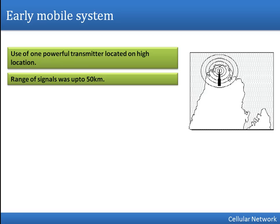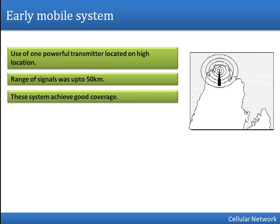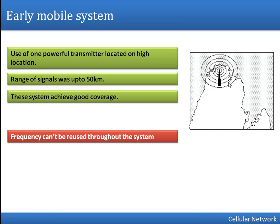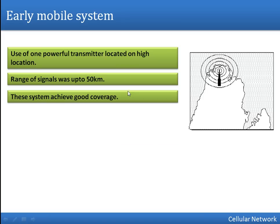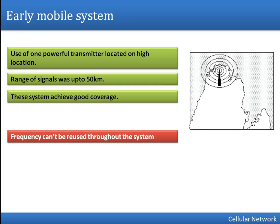The range of the signal for that transmitter was up to 50 kilometers, and this system achieved good coverage because there was only one transmitter. In order to cover this range, the transmitter needed a lot of power. So the key points of this traditional approach: single transmitter, very powerful, and only one transmitter used to cover the entire region.